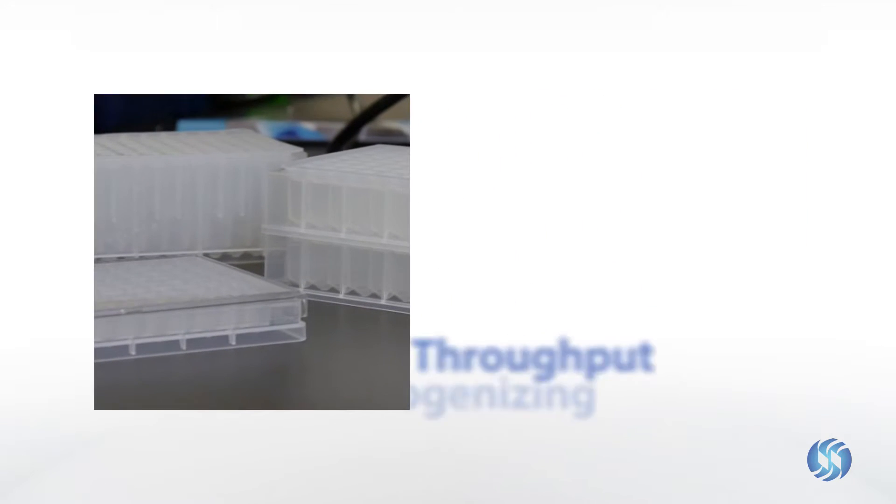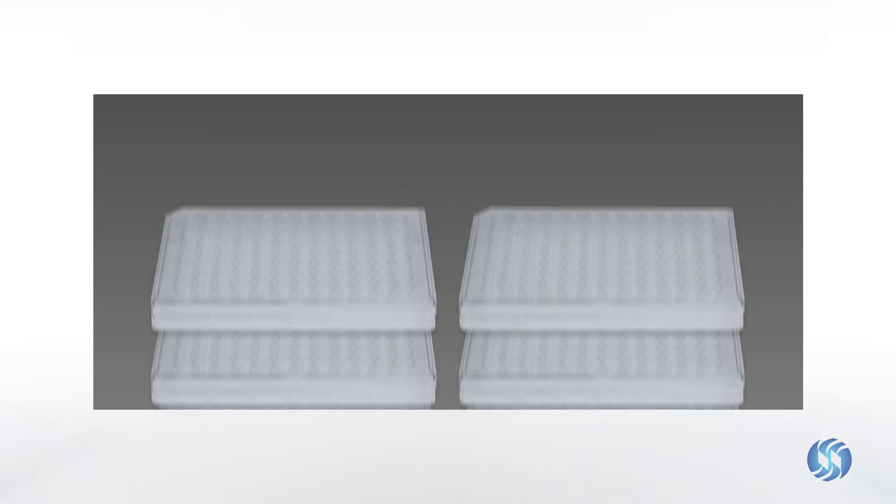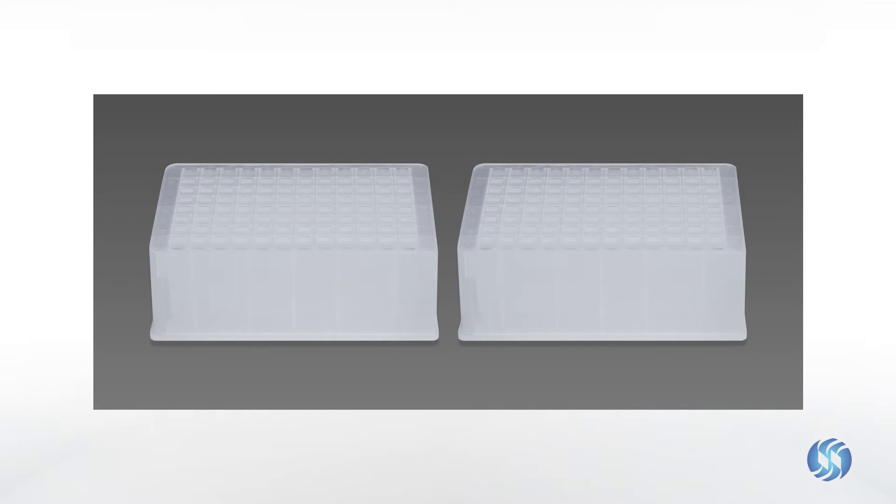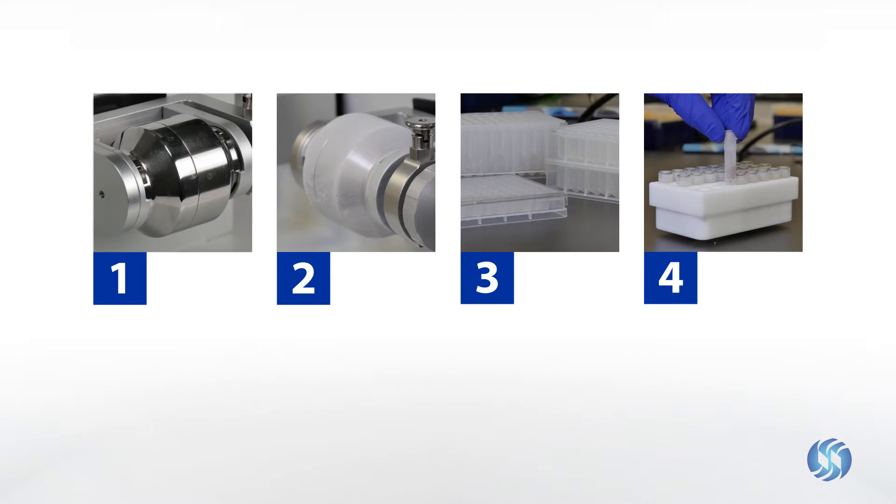For high-throughput bead homogenizing, the well plate attachment supports processing in six standard well plates, four one milliliter well plates, or two two milliliter deep well plates, enabling up to 384 samples to be dissociated in a single cycle.